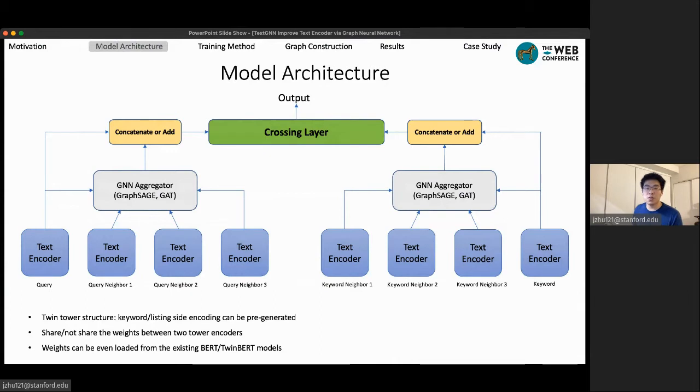In this case, twin tower structure is a good choice for us where we could compute ads representation vectors in advance, and when a query comes, we can then compute the representation vectors of the query online. We don't need to repeatedly calculate the ad sites.